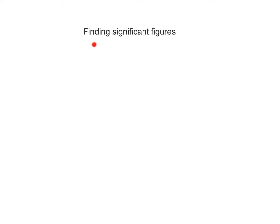So how do we go about finding significant figures? If we look at example A, we have the number 365, and we need to determine how many significant figures we've got. The rule is: start counting at the first non-zero digit. We don't have any zeros here, so I can start counting there. That'll be 1, 2, 3. So therefore, I have three significant figures.